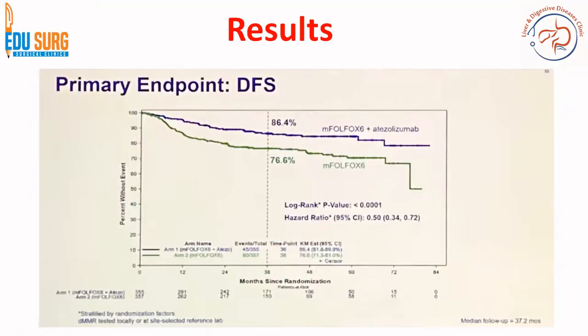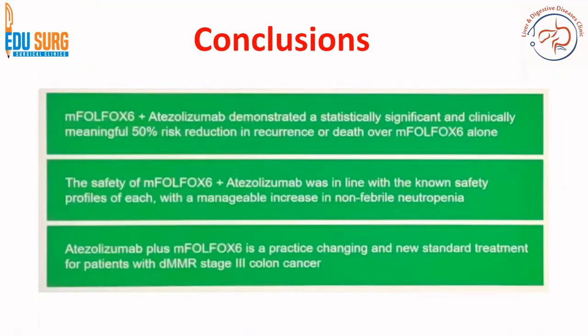The primary endpoint of disease-free survival showed very good results: 86% for the combination therapy versus 76% for modified Folfox-6, with a p-value of less than 0.0001 — highly significant. This demonstrates a statistically significant and clinically meaningful 50% risk reduction in recurrence or death compared to chemotherapy alone. The adverse event profile showed only an increase in non-febrile neutropenia, with an otherwise good safety profile, making this a practice-changing new standard of treatment for resected stage 3 colon cancer with deficient MMR.